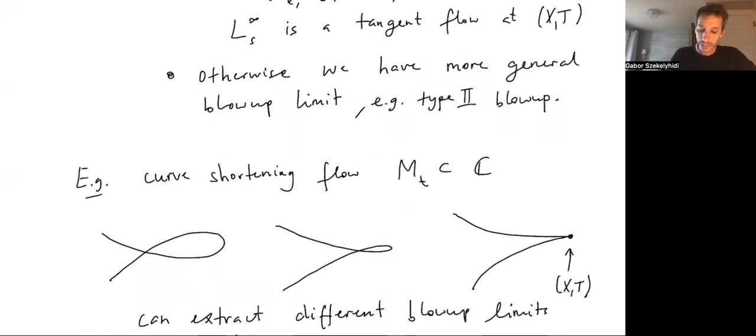Let me give a quick example. A very special case of mean curvature flow is when you take curves in a surface. In fact, this is an example of Lagrangian mean curvature flow, since any one-dimensional sub-manifold in C is Lagrangian. So there is a well-understood example of singularity formation here, when you have one of these loops.